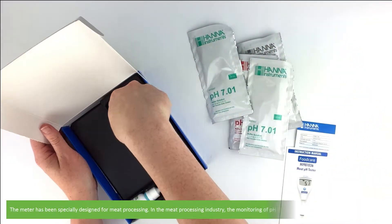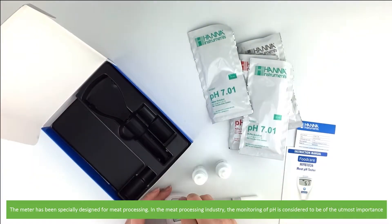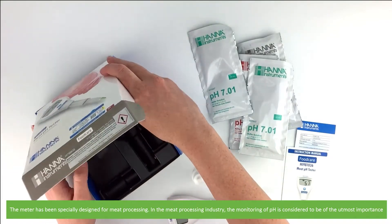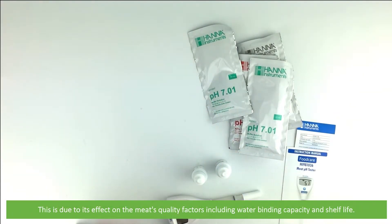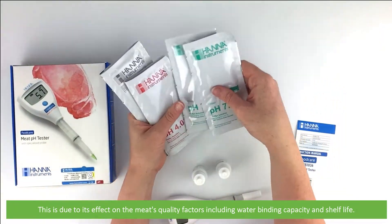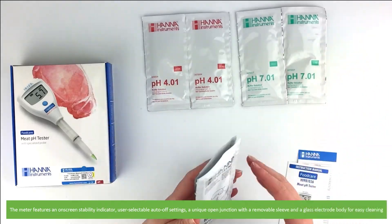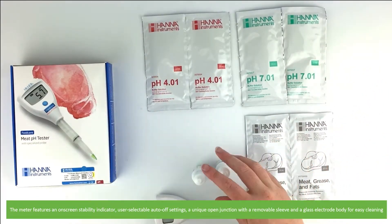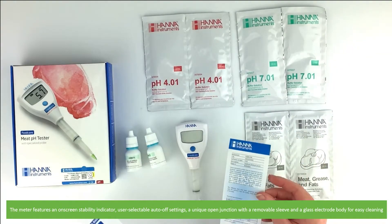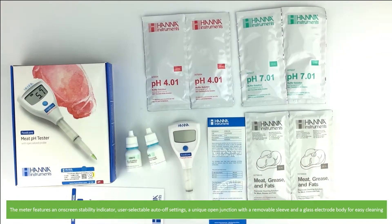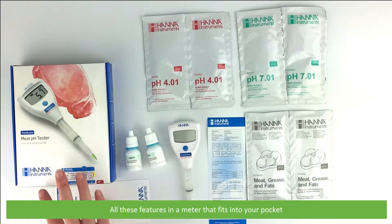The meter has been specifically designed for meat processing. In the meat processing industry, the monitoring of pH is considered to be of the utmost importance. This is due to its effect on the meat's quality factors including water binding capacity and shelf life. The meter features an on-screen stability indicator, user selectable auto-off settings, a unique open junction with a removable sleeve, and a glass electrode body for easy cleaning. All these features in a meter that fits easily into your pocket.